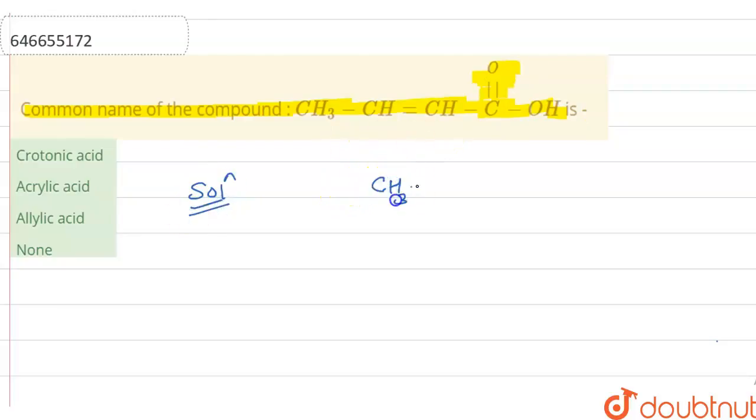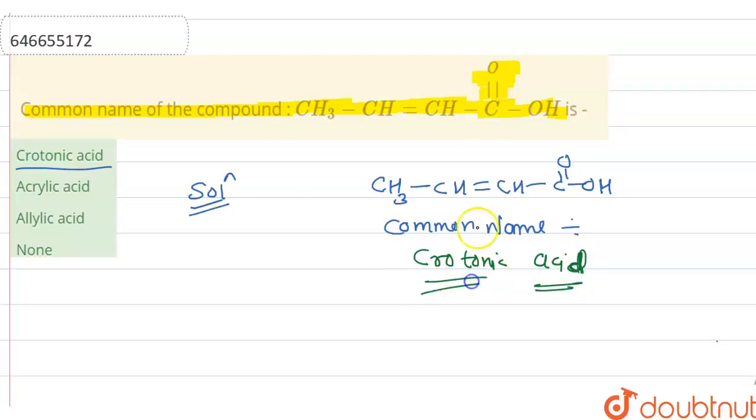This compound's common name is derived by - that is crotonic acid. The common name is derived by crotonic acid due to presence of carboxylic acid. We write crotonic acid. For this situation, we have to learn this name.